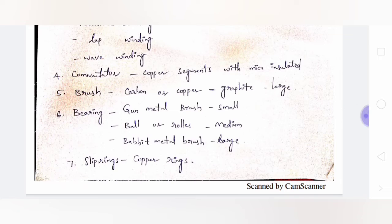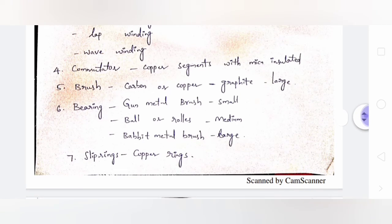Bearings are placed at the front end of the shaft and are used to allow smooth rotation of the shaft. Gunmetal bush-type bearings are used in small machines, ball or roller bearings are used in medium machines, and babbit metal bearings are used in large machines. Slip rings are made up of copper rings.